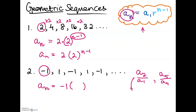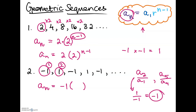a of 2 divided by a of 1 is 1 divided by negative 1, which equals negative 1. So negative 1 is our ratio. You can see why: negative 1 times negative 1 equals 1, which is the second term; then 1 times negative 1 equals negative 1, the third term — it just alternates between positive and negative while remaining magnitude 1. So our ratio is negative 1, and we write a of n equals negative 1 times (negative 1) to the power of n minus 1 as the general formula.